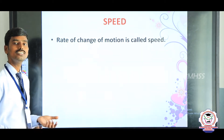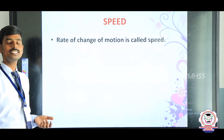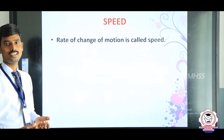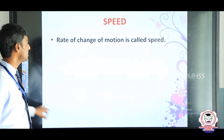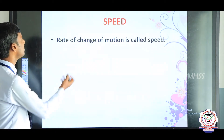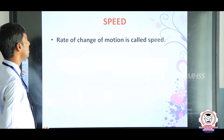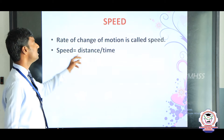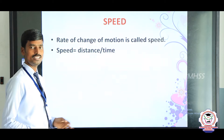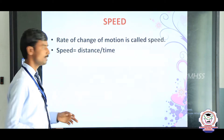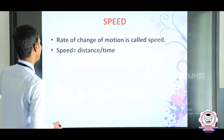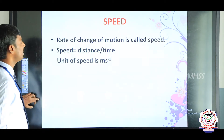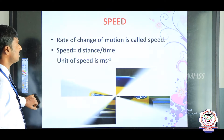Speed is a scalar quantity — not a vector quantity. The rate of change of motion is called speed. Speed is nothing but displacement divided by time taken, and the unit of speed is meter per second.